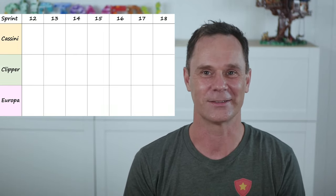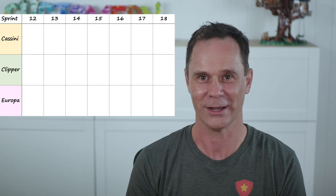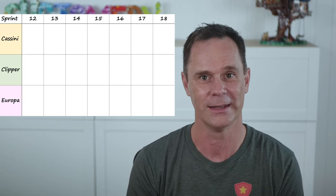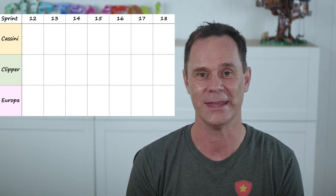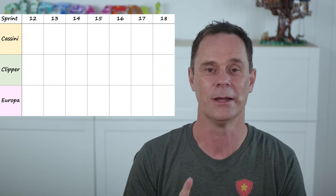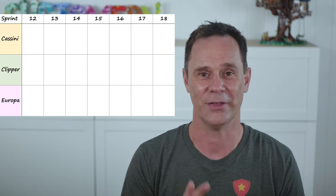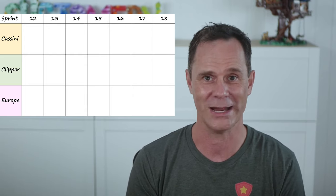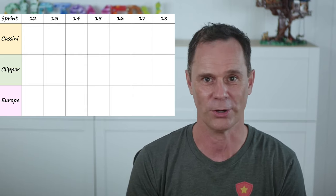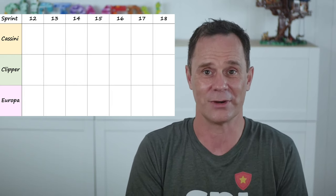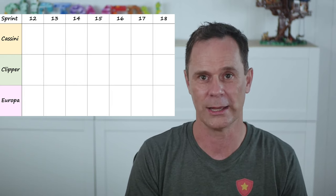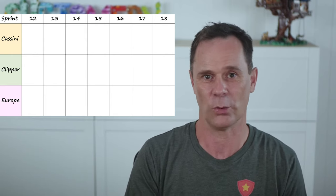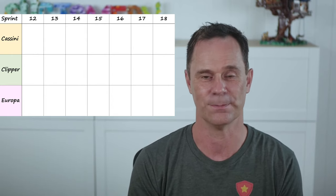Next, add a swim lane for each team working on your project. These could be internal or external teams. In my most recent project, we had the Dynamics 365 team, the MuleSoft integration team, and the Gen mainframe teams. Yours could be a combination of Microsoft customer and partner teams. You might even have three feature teams all working on different parts of a single complicated PowerApps or Dynamics 365 application.